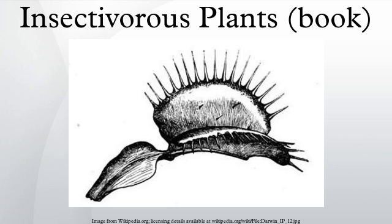The book chronicles Darwin's experiments with various carnivorous plants, in which he carefully studied their feeding mechanisms. Darwin tried several methods to stimulate the plants into activating their trap mechanisms, including feeding them meat and glass, blowing on them and prodding them with hair. He found that only the movement of an animal would cause the plants to react.